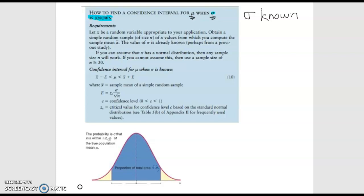Our requirements: Let x be a random variable appropriate to your application. Obtain a simple random sample of size n of x values from which you compute the sample mean x bar. The value of sigma is already known perhaps from a previous study.